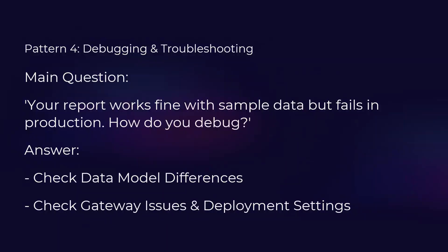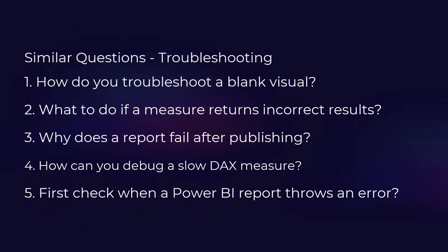Pattern four is debugging and troubleshooting. If your report works fine with sample data but fails in production, check data model differences — ensure the schema matches production. Compare the schema used in development with production data. Then check gateway issues, deployment settings, permissions, and refresh settings.